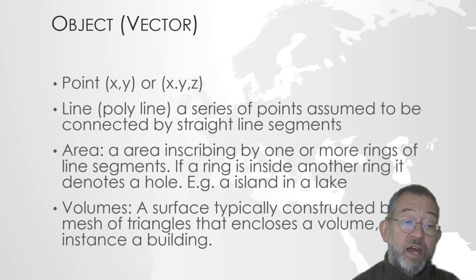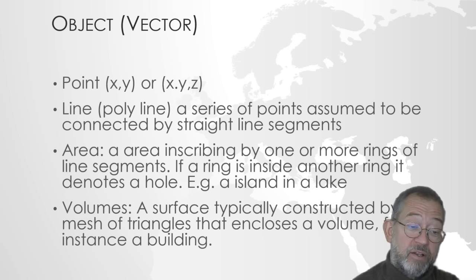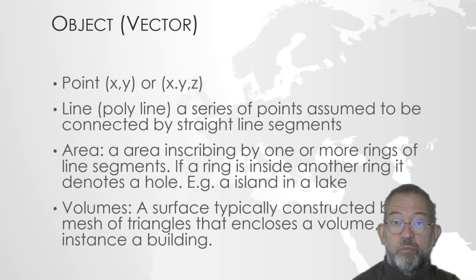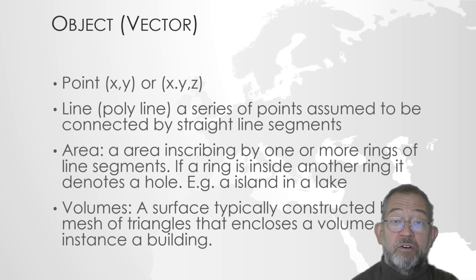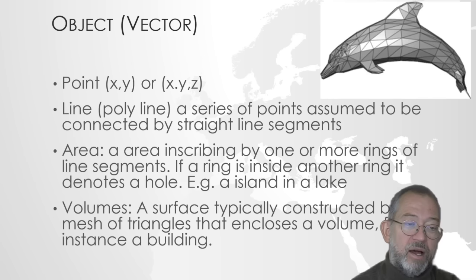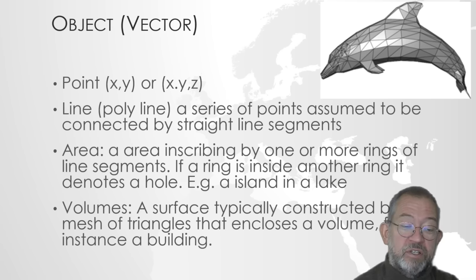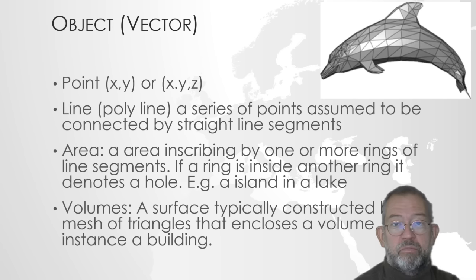Our objects — points, lines, and polygons — can all be given by an x and y, or x, y, and z value. A point has one coordinate. Lines consist of a series of points connected by straight segments. An area is a series of points where the first and last point are the same, constituting a ring — and if there is another ring inside it, it constitutes a hole, like an island inside a lake. Volumes are less common but are beginning to appear in GeoData, typically represented as a mesh of triangles enclosing a volume, such as a building.